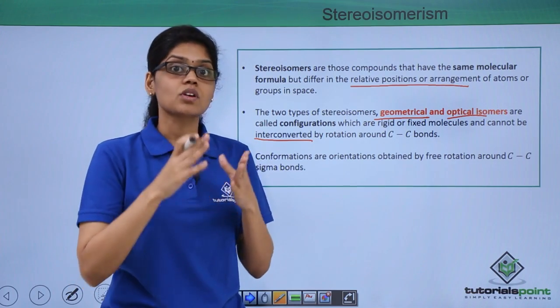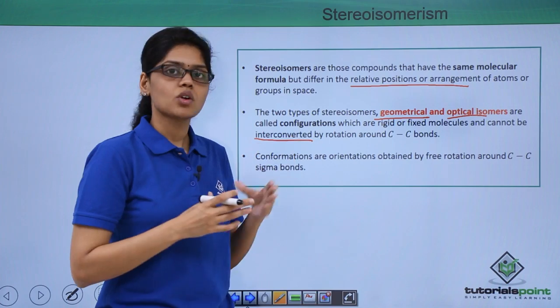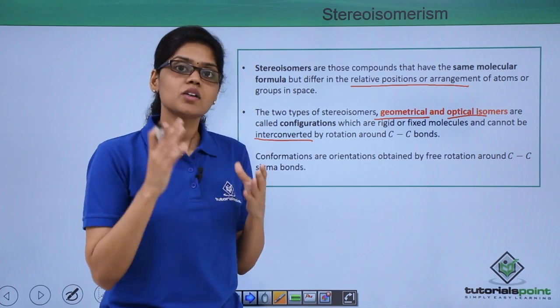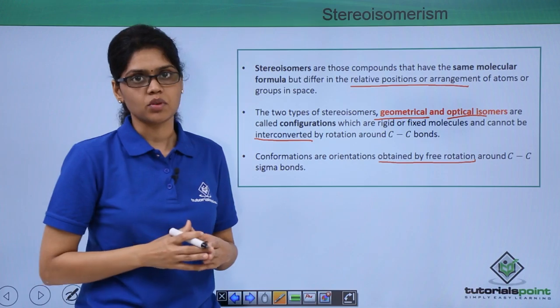We also have another class of isomers called conformational isomers which in contrast to configurational isomers are orientations obtained by free rotation around C-C single bond.